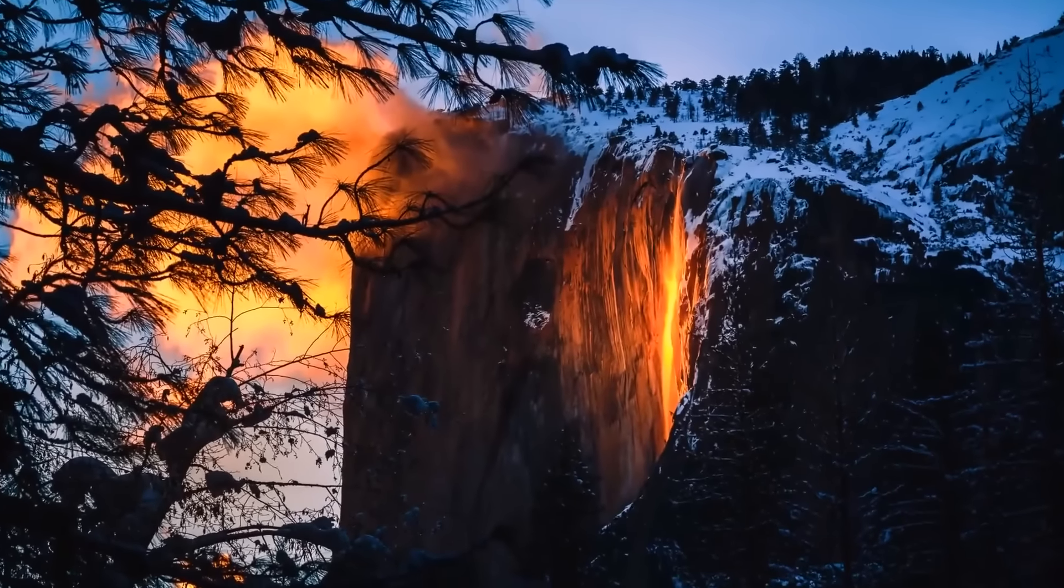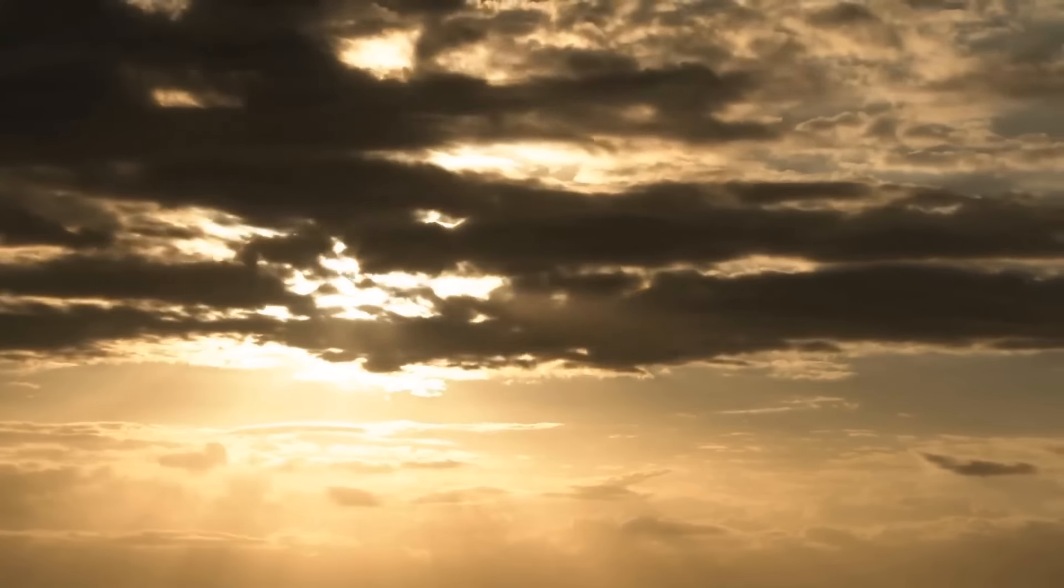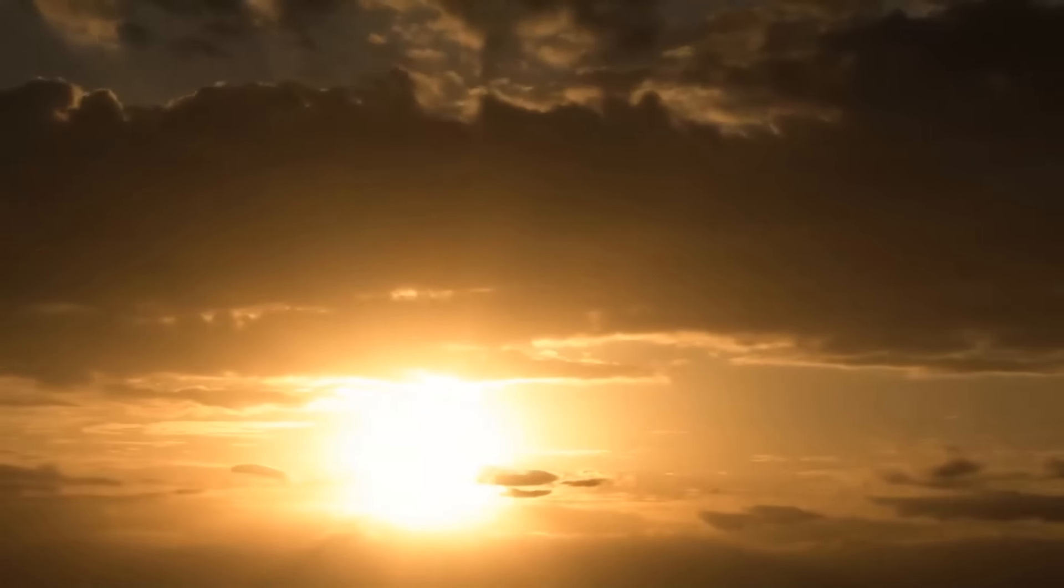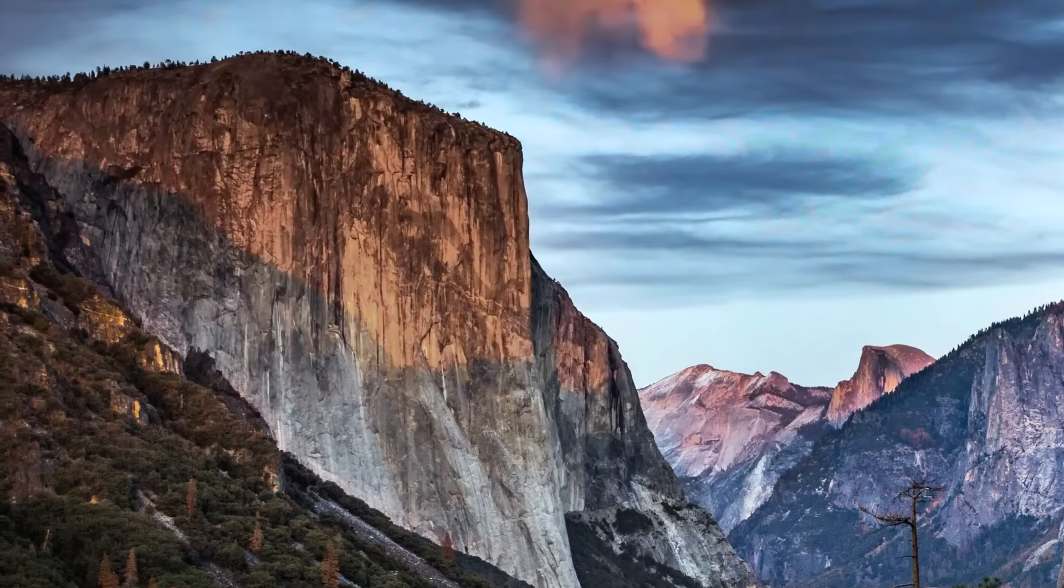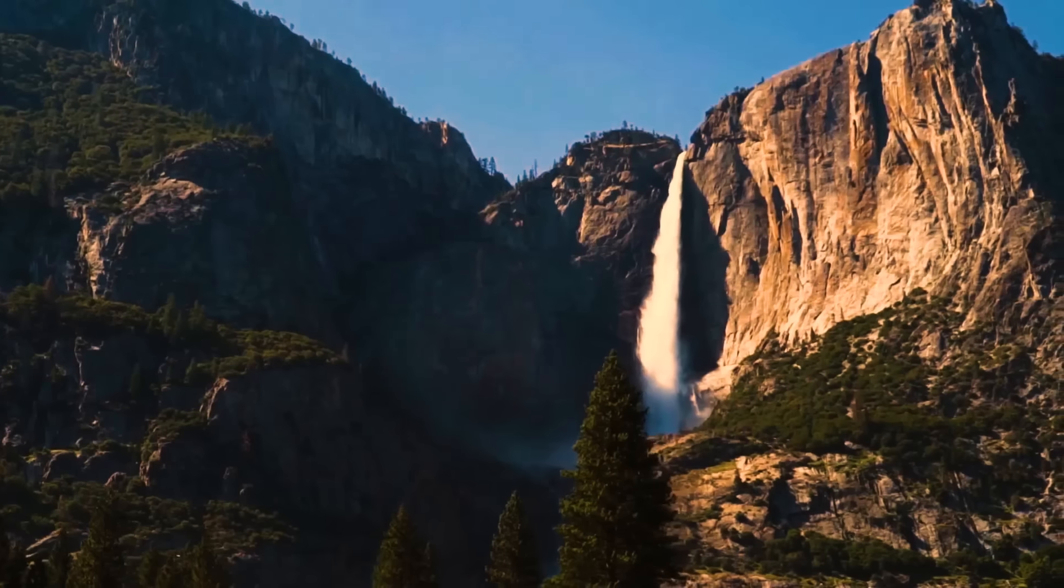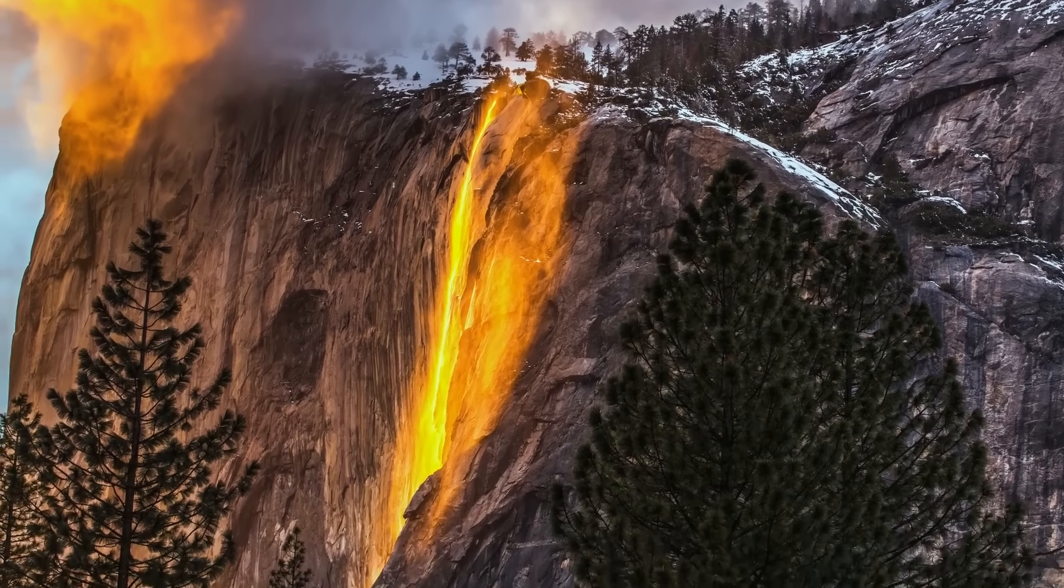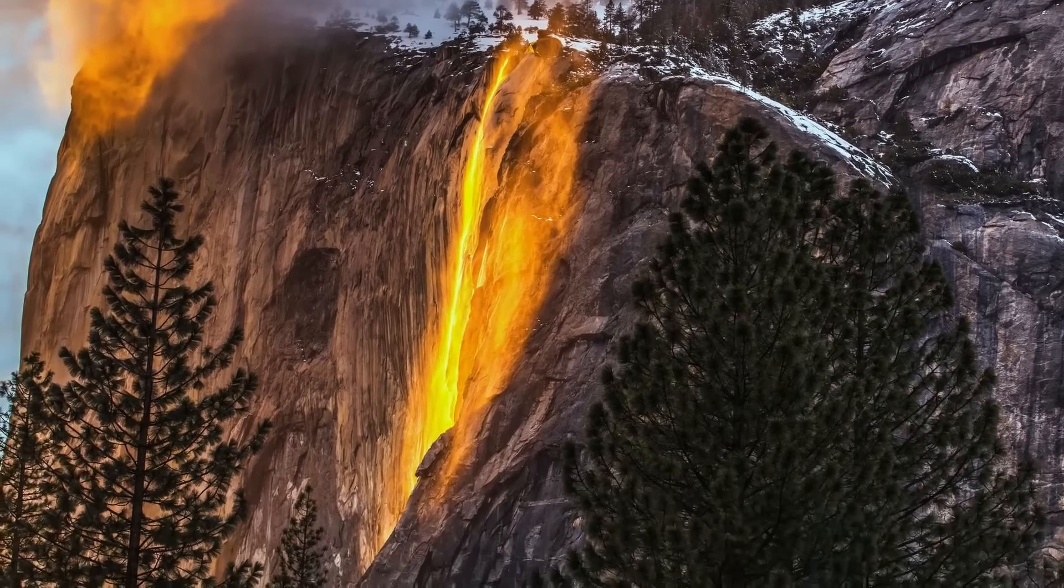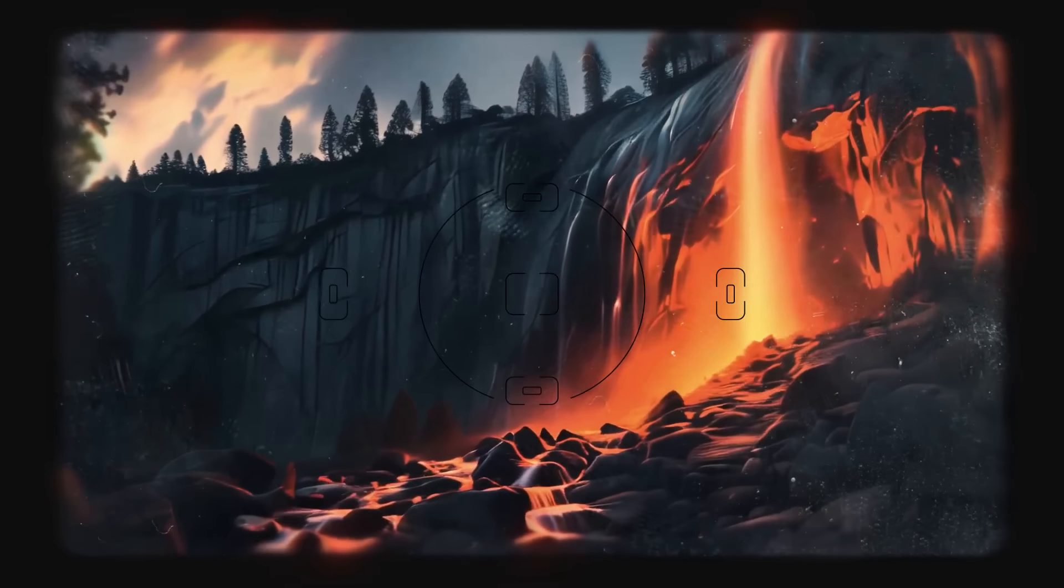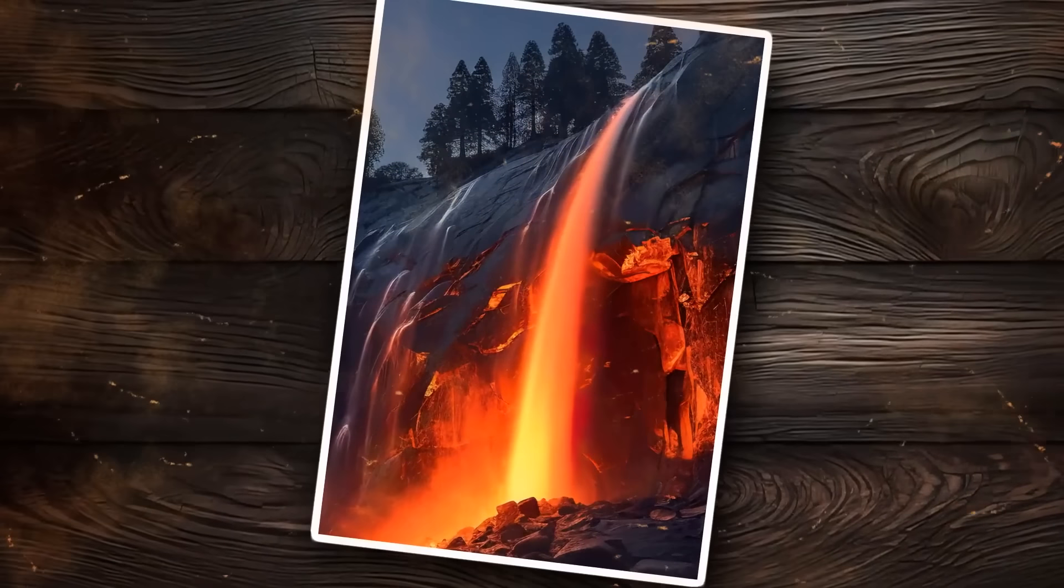Have you ever seen a waterfall on fire? Every February, when the stars align just right, Horsetail Fall in Yosemite National Park gets a sensational makeover. As the sun sets, its rays hit the waterfall at the perfect angle, transforming it into a blazing display of vibrant orange and red hues. We don't know exactly who and when discovered this natural miracle, the original valley dwellers may have known about it, but they kept it to themselves. It wasn't until 1973 that photographer Galen Raul captured the first known photo of the waterfall, bringing it into the limelight.